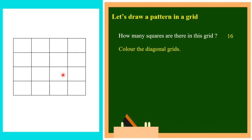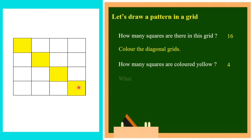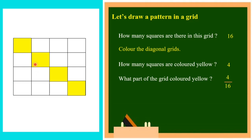Let's color this way. Coloring 1, 2, 3, 4 diagonal squares. After coloring, how many squares are colored yellow? Totally 4 squares are colored yellow. What part of the grid is colored yellow? Totally there are 16 squares and out of 16 squares only 4 squares are colored yellow. So we can say 4 by 16 parts colored yellow.